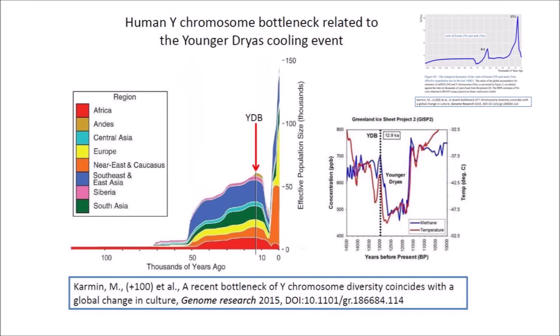Humans also suffered at the onset of the Younger Dryas cooling period. Geneticists have found that humans went through a severe Y chromosome bottleneck. During the most adverse time, only one male was born for every 17 females. This was a global phenomenon.